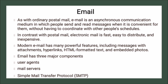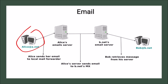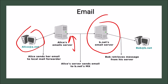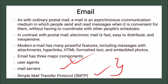Email has three major components: user agent, mail server, and SMTP — Simple Mail Transfer Protocol. In a basic email flow: Alice sends her email to her local mail server, Alice's server sends the email to Bob's mail server (b.net's MX), and then Bob retrieves messages from his server and receives the mail. This is a simple demonstration of how email communication works.